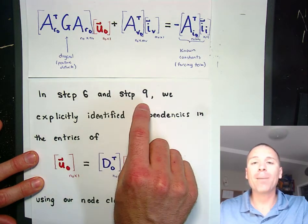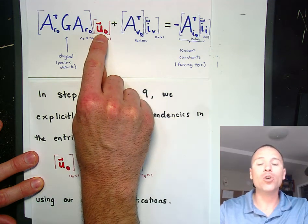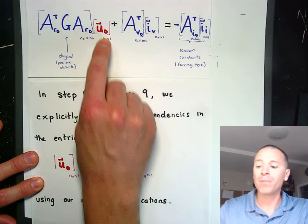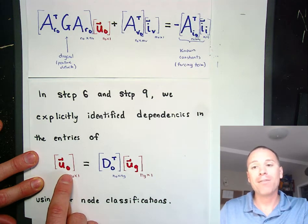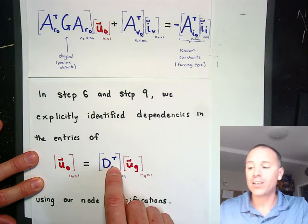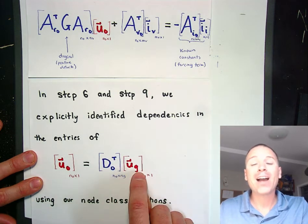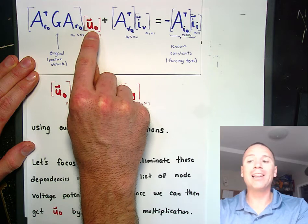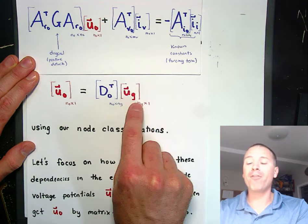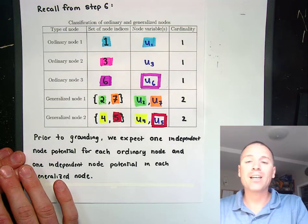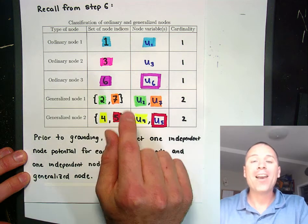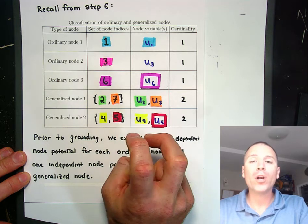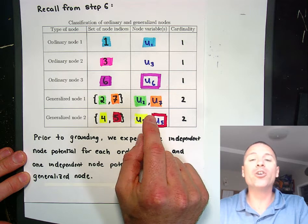Voltage sources introduce dependencies across the node potentials, and we have quantified and studied those dependencies in both step 6 and step 9 of our algorithm. When we looked at the vector u sub 0 — the grounded node potentials, where the ground node was set to 0 and thus ignored — we defined that in step 7 to be u sub 0 equals the grounding matrix D0 transpose times u sub g, the vector of all node potentials including the ground node. The whole point of step 6 was that when we know the connectivity of voltage sources, we can use that to reduce the number of unknown node potentials we need, because each voltage source introduces a redundancy.